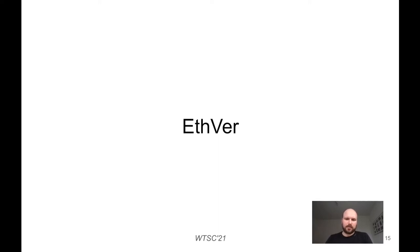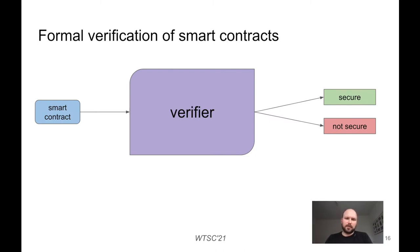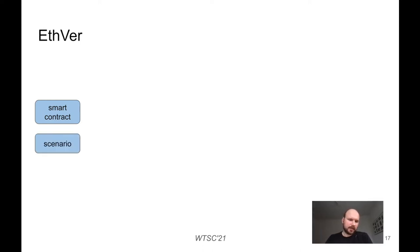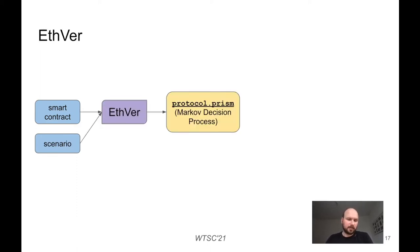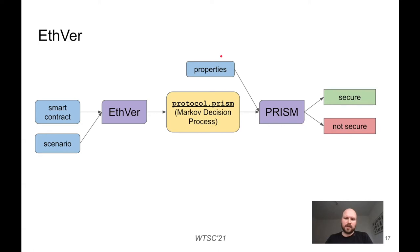Now we are ready to talk about Edver. When we think about formal verification of smart contracts, we usually think of a black box that takes a smart contract as input and outputs whether it's secure or not. Since we want to verify not only the contract but also the scenario, Edver takes both a smart contract and a scenario as input, and produces a PRISM model as output. We then define properties and use PRISM to verify them — PRISM responds whether properties are true or false, and if not secure, provides a counterexample showing the interleaving which leads to the false property.